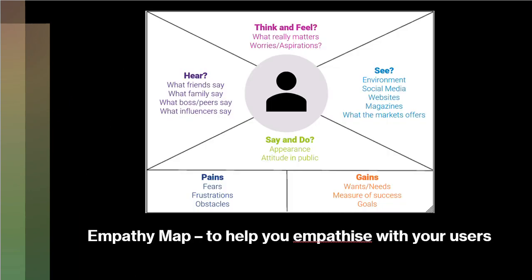So let's look at the elements in the Empathy Map. As you can see, there are four quadrants: Think and Feel, See, Hear, and Say and Do. At the bottom there are two more elements: Pains and Gains. In the middle, you have the user. The Empathy Map helps you empathize with your users — you figure out what they think and feel, what they see, what they hear, what they say and do, and what are the pains and gains of the user.